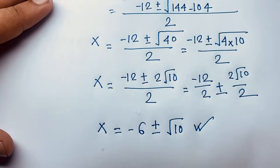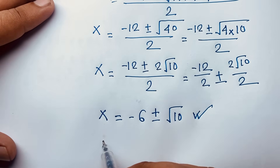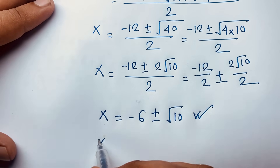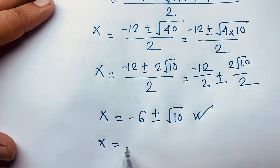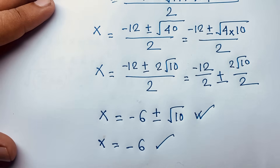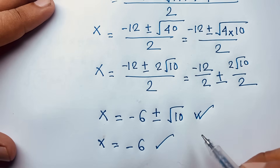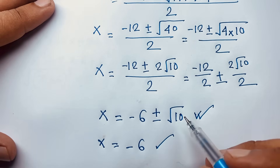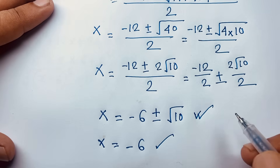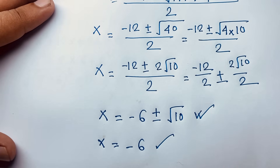So the complete solutions are x = -6, or x = -6 ± √10. These are all the values of x. Thank you all — if you enjoyed this video, subscribe to my channel for other interesting videos. Goodbye, take care!